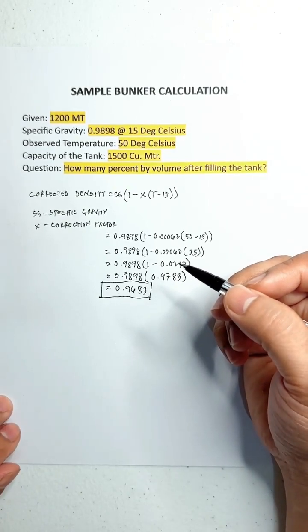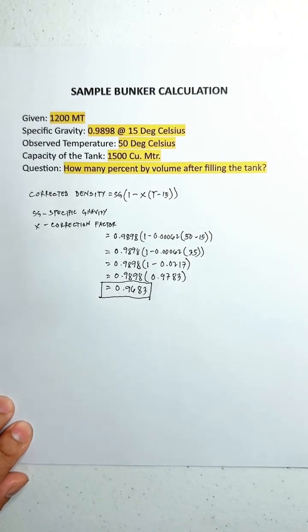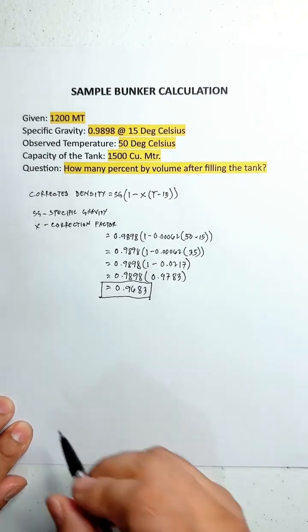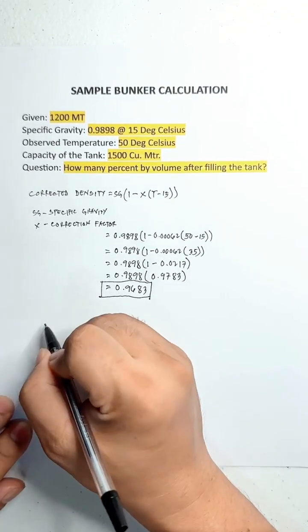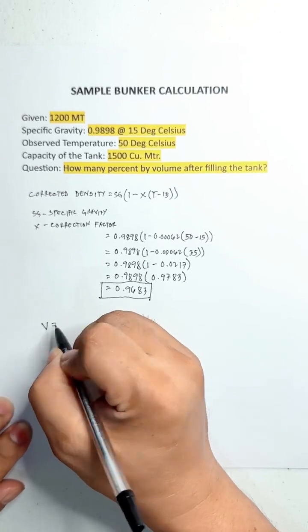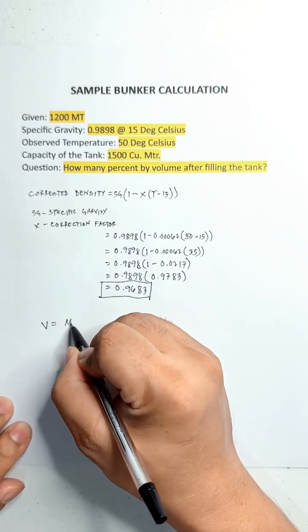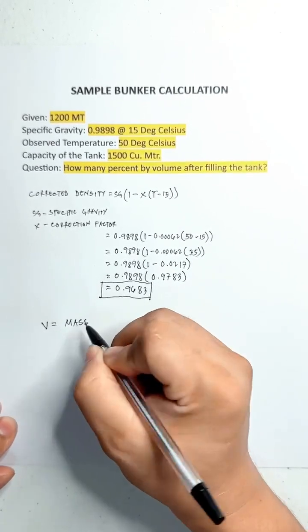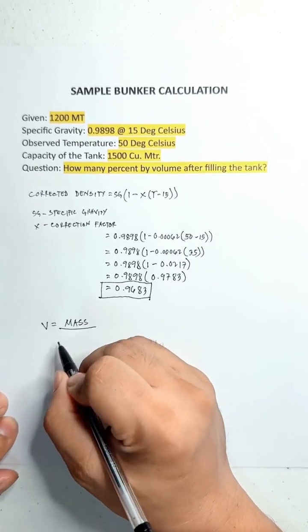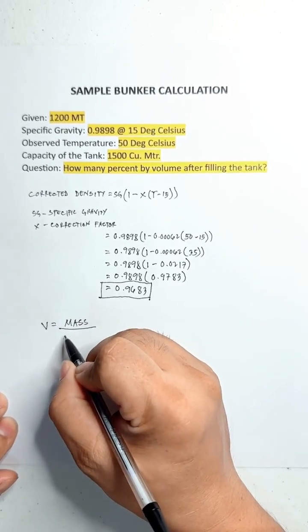The formula for getting the corrected volume is: volume equals mass over corrected density.